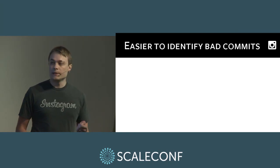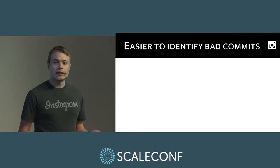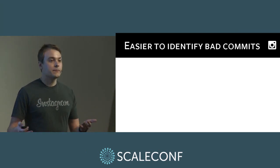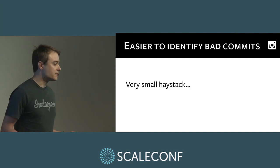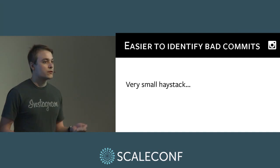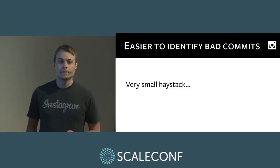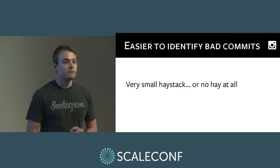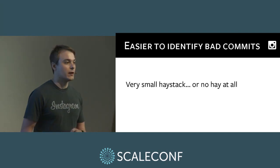Secondly, it makes it much easier to identify bad commits. When you're deploying tens or hundreds of commits in one go and something breaks, that's a big haystack you need to search through to figure out what the bad commit is. With continuous deployment, your haystack is much smaller. In our case, most of the time there is no hay, because we're deploying one commit at a time and so it's obvious what the problematic one is.